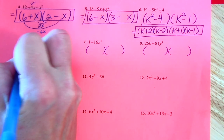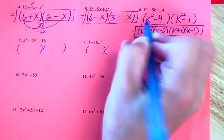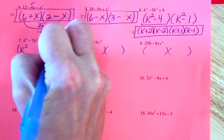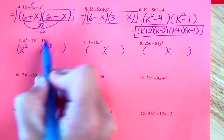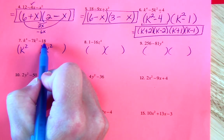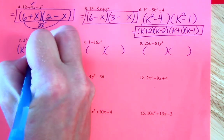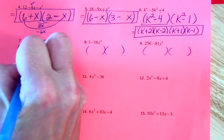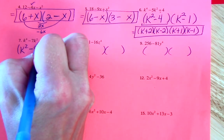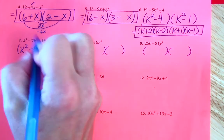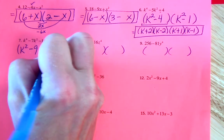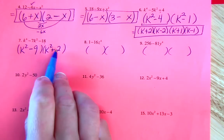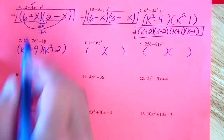When it's k to the fourth, just like before, it'll start k² times k². The two numbers that multiply to 18 and combine to 7 are 9 and 2, with 9 being the larger. The signs are different because of the negative 18, so negative 9 times positive 2 is negative 18, and negative 9 plus 2 is negative 7.